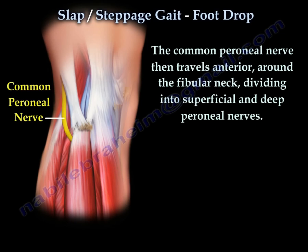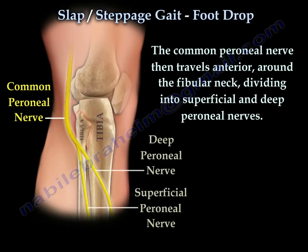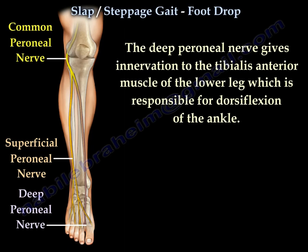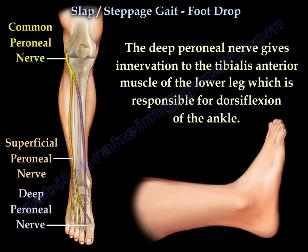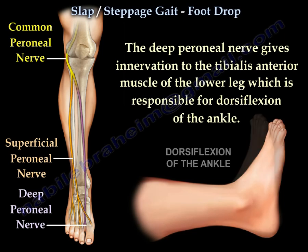The common peroneal nerve travels anteriorly around the fibular neck, dividing into superficial and deep peroneal nerves. The deep peroneal nerve gives innervation to the tibialis anterior muscle of the lower leg, which is responsible for dorsiflexion of the ankle. Here you can see an example of dorsiflexion of the ankle.